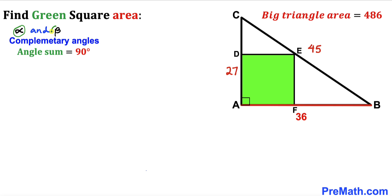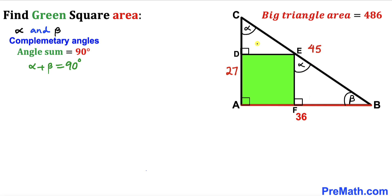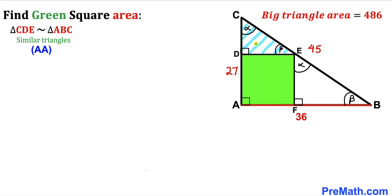Let's assume alpha and beta are two complementary angles, meaning alpha plus beta equals 90 degrees. In the big triangle ABC, one angle is alpha, the right angle is 90 degrees, so the remaining angle is beta. In triangle EFB, one angle is 90 degrees and one is beta, so the remaining angle is alpha. In triangle EDC, one angle is 90 degrees and one is alpha, so the remaining angle is beta. Therefore triangle EDC is similar to triangle ABC by the angle-angle similarity theorem.